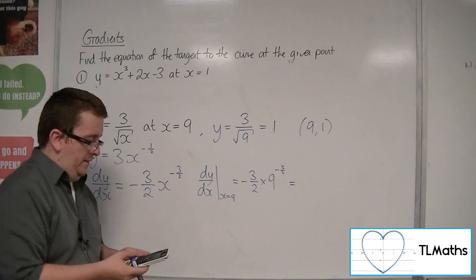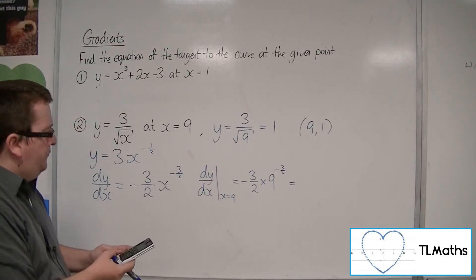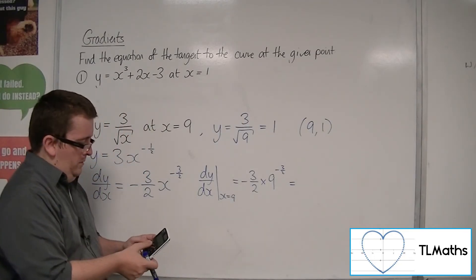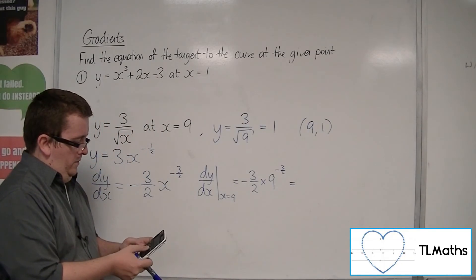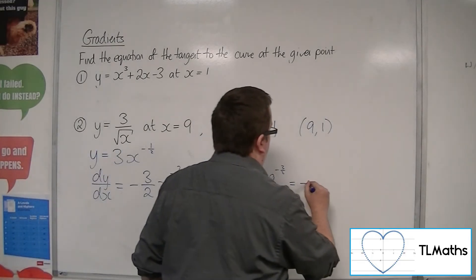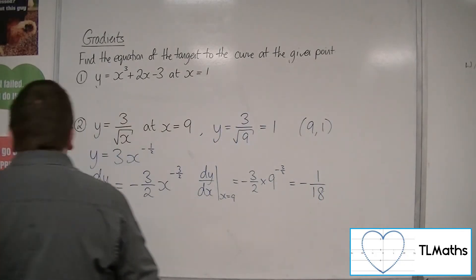So I'm going to pop that in the calculator. So minus 3 halves times by 9 to the power of minus 3 halves. And you get minus 1 over 18. So that is the gradient of the tangent line.